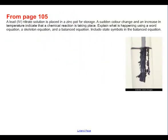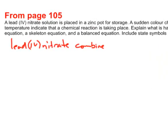From page number 105, we have lead four nitrate is placed in a zinc pot. And there's obviously a chemical reaction takes place. So write it as a word equation, a skeleton equation, and a balanced equation. The word equation would be lead four nitrate combines with zinc to form, and what's it forming? We're going to trade partners here.